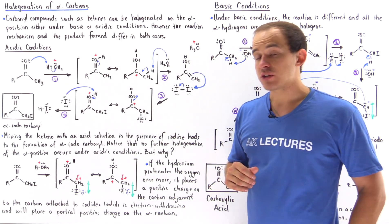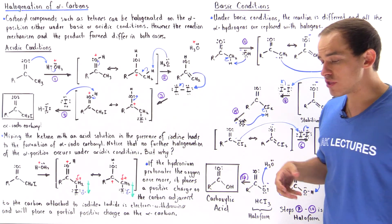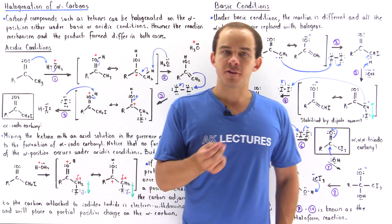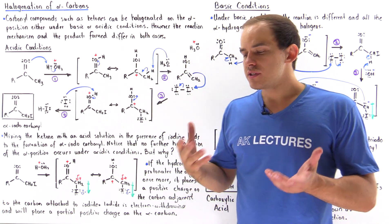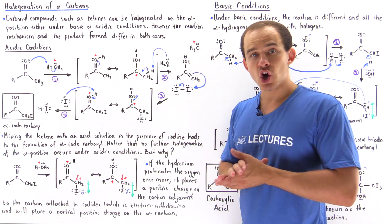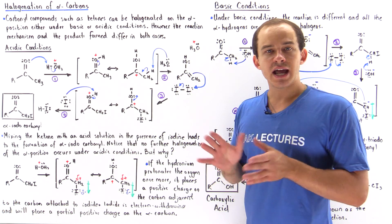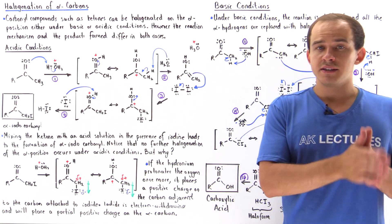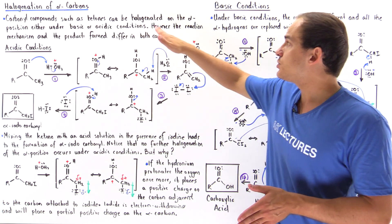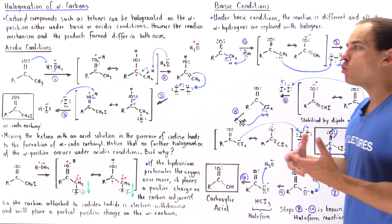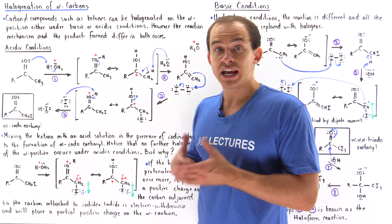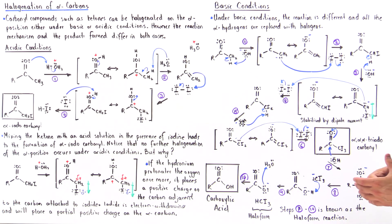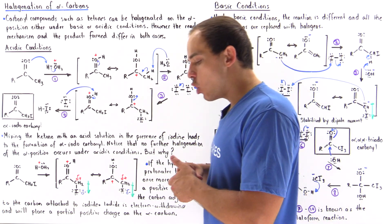The next type of reaction we're going to discuss that deals with the alpha carbon of the carbonyl is halogenation of the alpha carbon. Certain types of carbonyl compounds such as ketones can be halogenated at the alpha position either under acidic or under basic conditions. These two types of conditions undergo different types of reactions — they have different reaction mechanisms and produce different types of products.